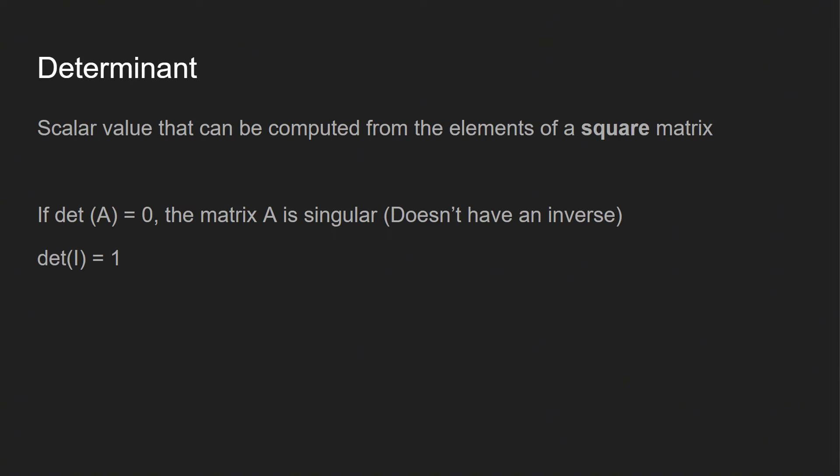Let's start learning about what a determinant is. It's a scalar value that is computed from the elements of a square matrix. If the determinant of a matrix is zero, the matrix is going to be singular, which essentially means there is going to be no inverse associated with it. On the identity matrix — where the left-to-right diagonal is all ones and everything else is zero — the determinant is going to be one every time.